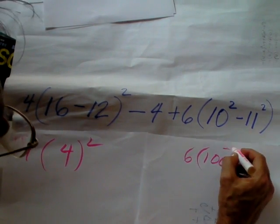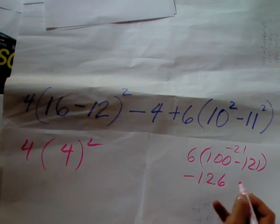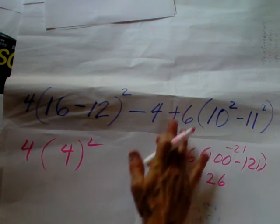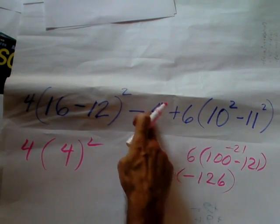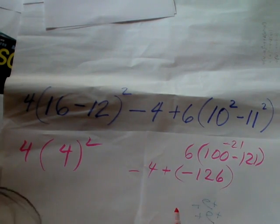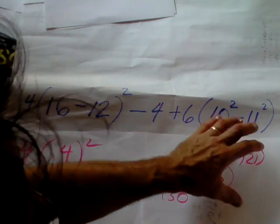So this will be a negative 21 times 6, which is a negative 126, right? All of this is negative 26. And we're adding the negative 4 to it. Oh wow. So now it's negative 130, all that, right?